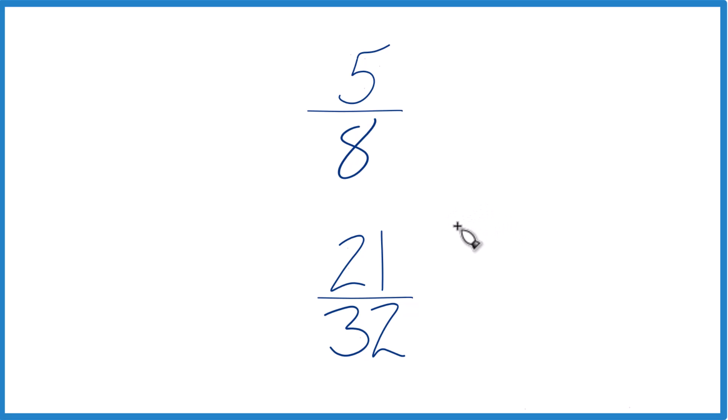You could also find a common factor. So we want to find a factor that both 8 and 32 go into evenly, because if we have the same denominator here, we just compare the numerator. Then we can tell if 5/8 is greater than or less than 21/32.